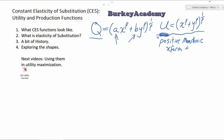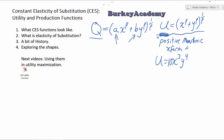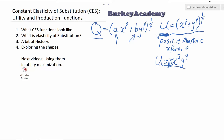For example, you can take any utility function like this one, or a Cobb-Douglas utility function like X to the three times Y to the four. The simplest kind of positive monotonic transformation you could do is just multiply that whole thing by 10. That changes the scale and the units of utility, but it's not going to affect the predictions of the choices that people are going to make, whether you put the 10 there or not.